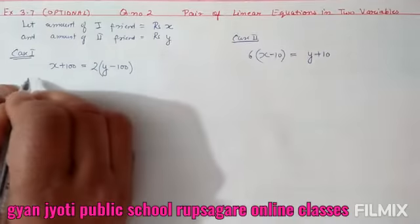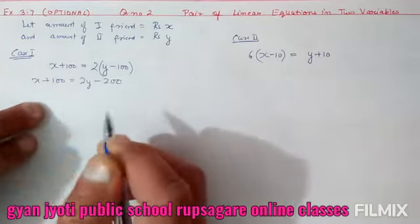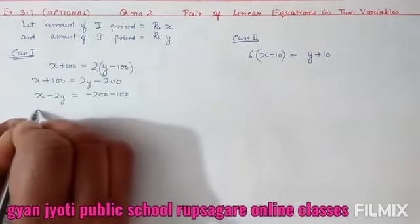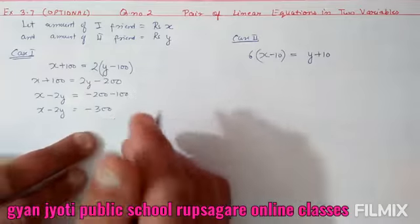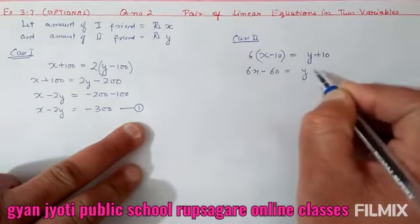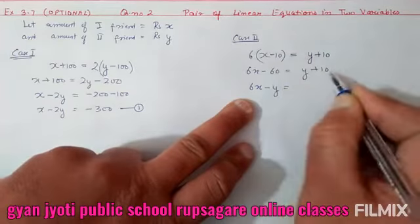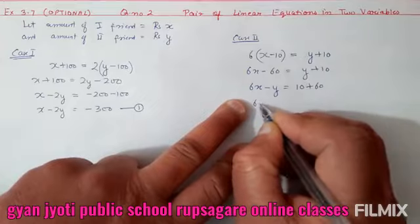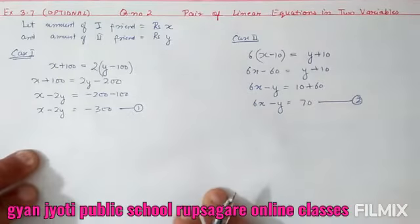Equation 1 banegi: x + 100 = 2(y - 100), simplify karo: x - 2y = -300. Equation 2: 6x - 60 = y + 10, simplify karo: 6x - y = 70. Yeh aapki final equation 1 aur equation 2 hain. Ab elimination method se x aur y nikaalenge.